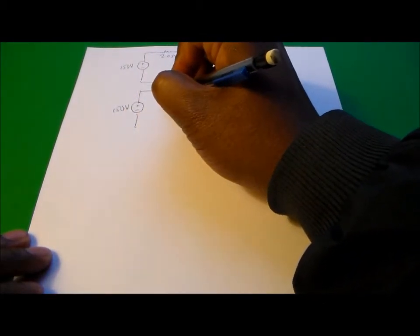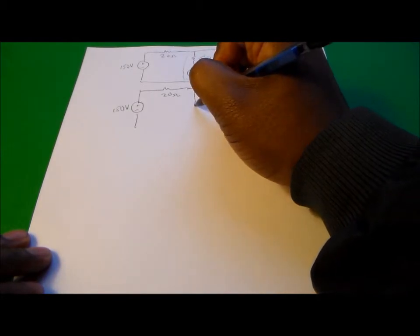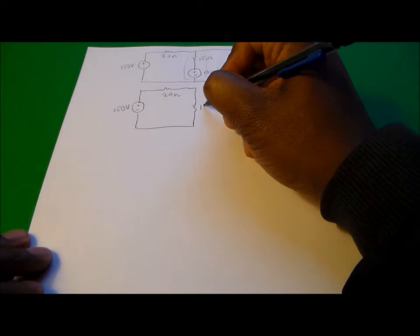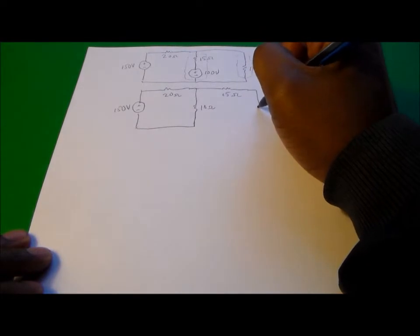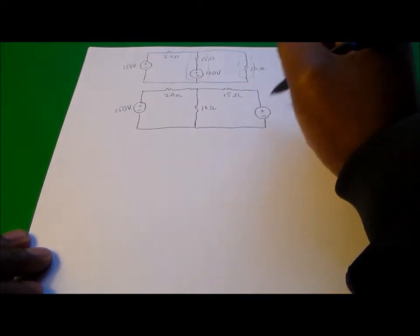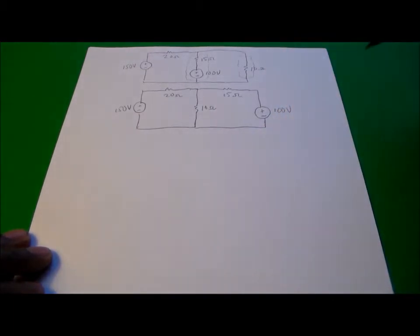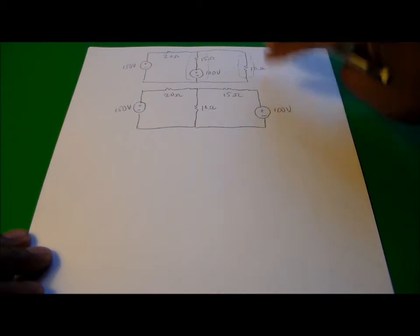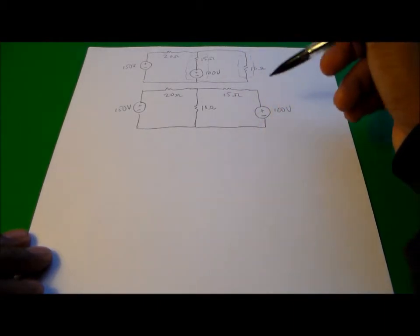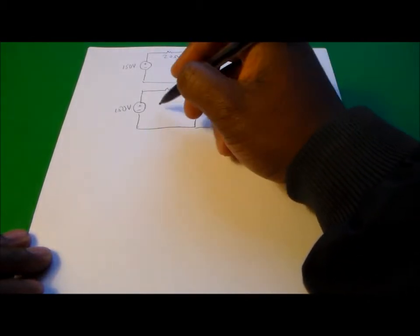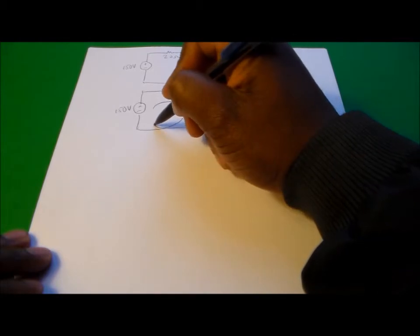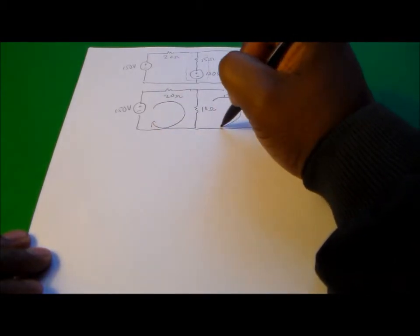So we have our 150-volt voltage source, the 20-ohm resistor, and — remember we flipped here — we now have the 10-ohm resistor in the middle, the 15-ohm resistor, and the 100-volt voltage source on the other side. Electronically both circuits are exactly the same thing, and now we have just a resistor in the middle shared between the two meshes.